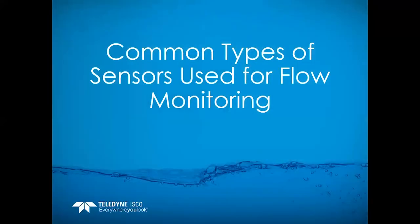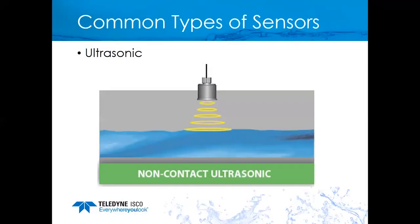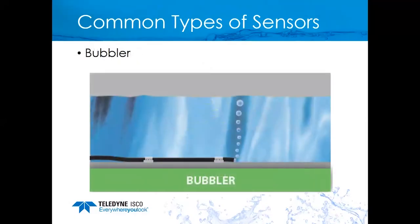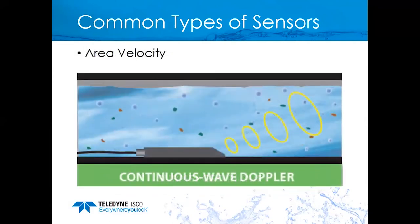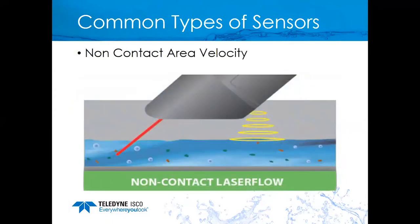Some of the common types of sensors used in flow monitoring are the ultrasonic sensor, the bubbler, the submerged pressure transducer, a continuous wave area velocity sensor, and a non-contact area velocity sensor such as the laser flow.